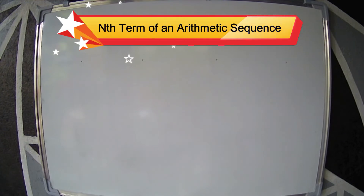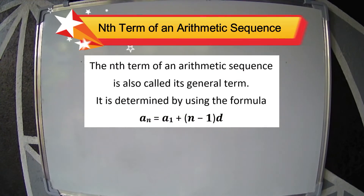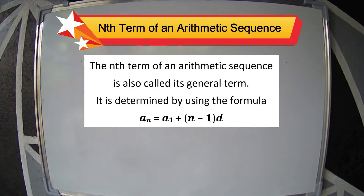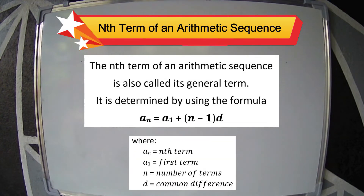The nth term of an arithmetic sequence is also called its general term. It is determined by using the formula: a sub n equals a sub 1 plus the quantity n minus 1 times D. Where a sub n is the nth term, a sub 1 is the first term, n is the number of terms, and D is the common difference.